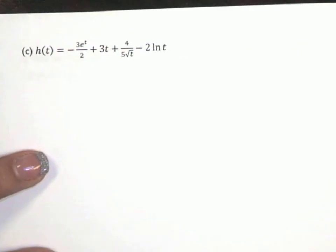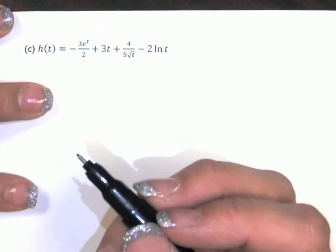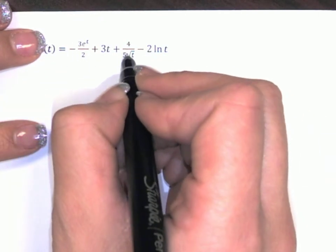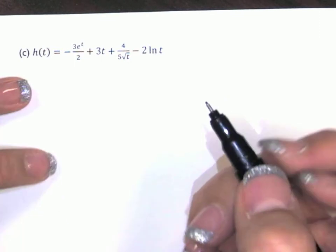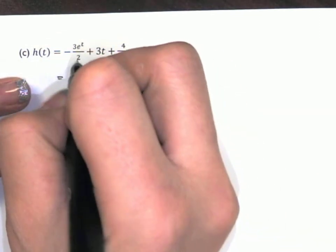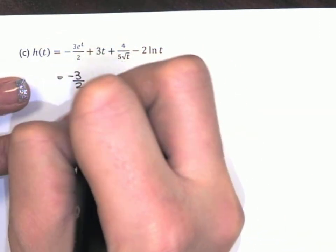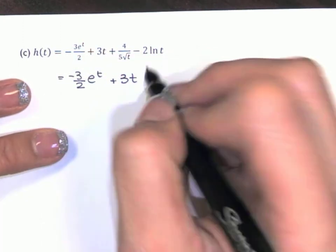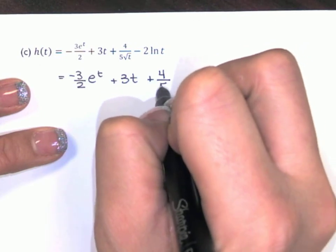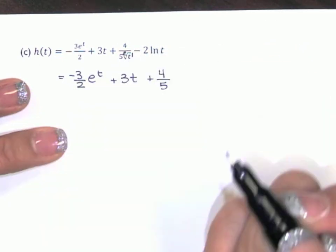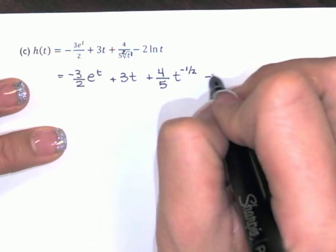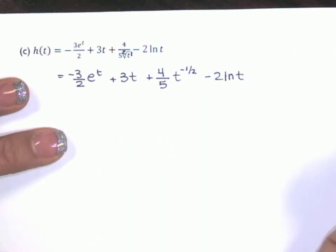Next page — same thing. We want the first and second derivative of h of t. I notice I've got constants in the denominator, so I want to do some rewriting before computing a derivative. I bring out the constant: that's a negative 3 over 2 times e to the t, plus 3t. Here the constant is 4 over 5, and that's a t to the 1 half in the denominator, so when I bring it up to the numerator that becomes t to the negative 1 half.